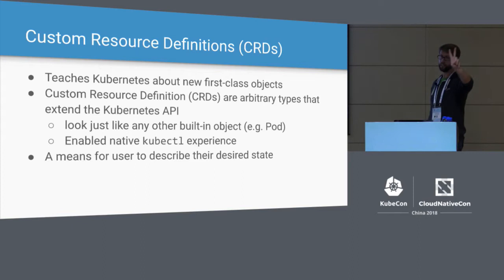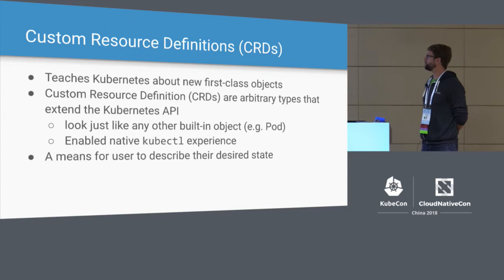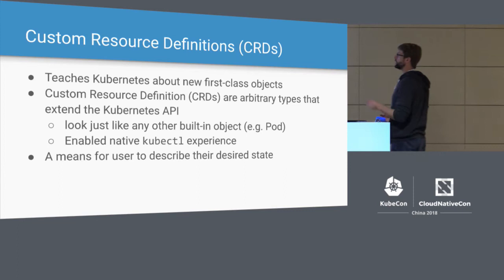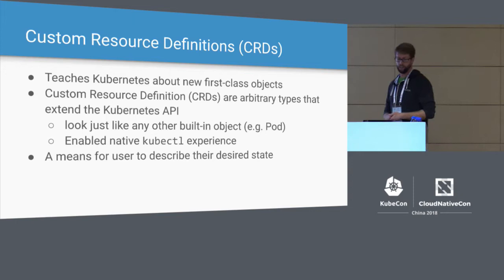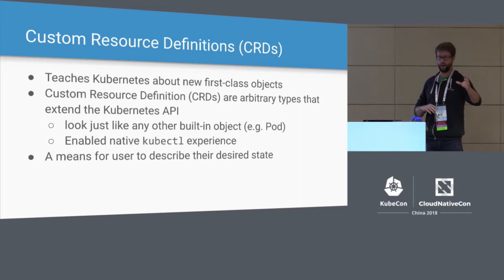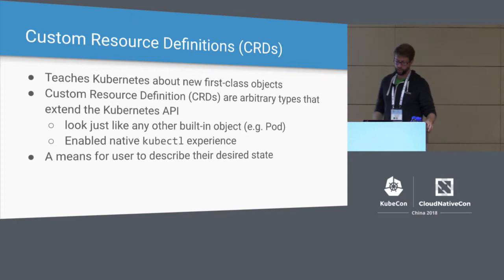The second key concept is Custom Resource Definitions, or CRDs. This is the formally supported way that Kubernetes allows you to teach it about new objects — to extend Kubernetes and define your own arbitrary objects. There was an amazing talk this morning about how to test these CRDs by Christy Wilson from Google. Basically, this allows your own app's objects to look like any other built-in object — a pod or a config map. You can make your custom object look just like a first-class built-in object from kubectl, the command line.